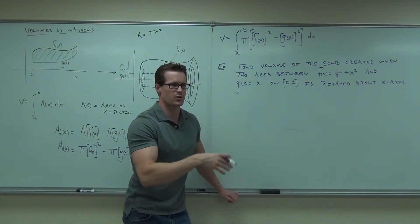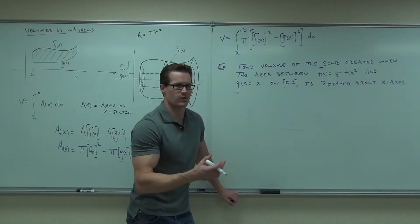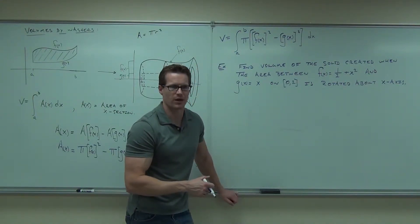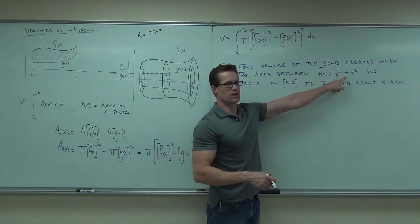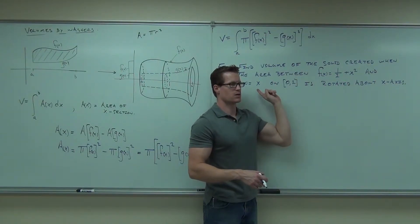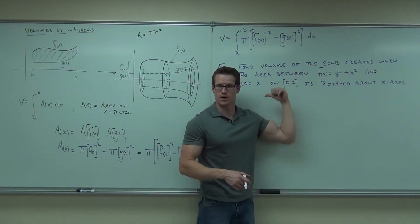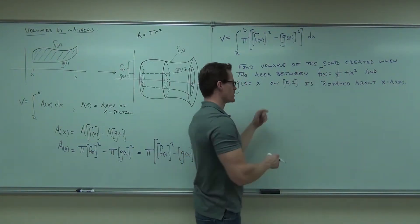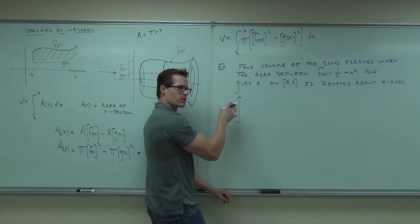So if one's always on top, plug in a number. What number are you going to plug in? One. Pick something in the middle of it. One. It doesn't really matter, but plug in one. If you plug in one here, you're going to get one and a half. If you plug in one here, you're going to get one. Which one's higher? So this is going to be higher than this one, right? It's always on the top. I drew the picture for you, but that allows you to set up even without a picture.